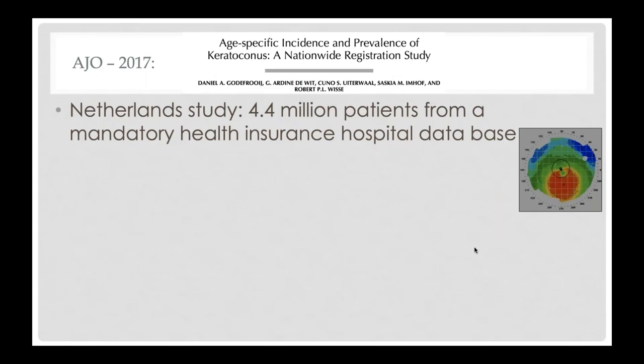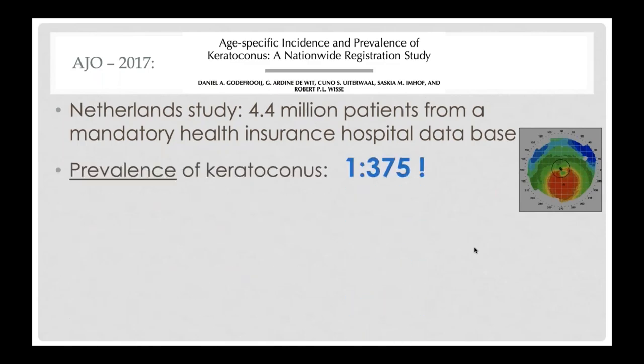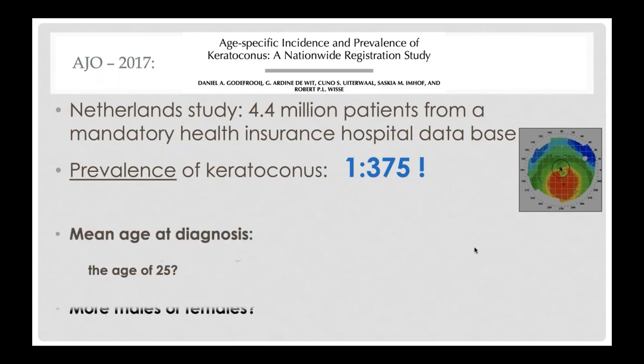How common is keratoconus? This more recent study from the Netherlands found that the prevalence of keratoconus is 1 in 375 — much more common than we once thought. If you perform 375 cataract surgeries per year, there's a chance that at least one patient will have keratoconus. If you perform 750, then two patients. I think the number may be even higher in the United States among cataract patients, and we're going to see this quite commonly.